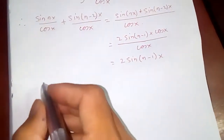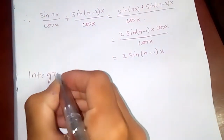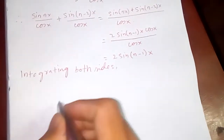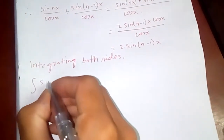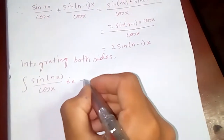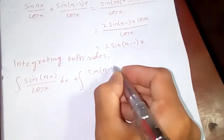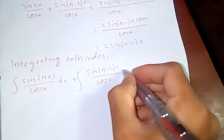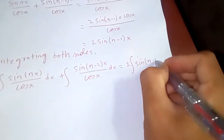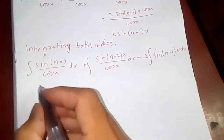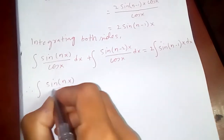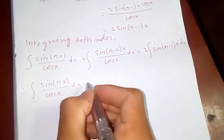Let's integrate both sides. So the integration of sin^n(x) over cos(x) dx plus the integration of sin^(n-2)(x) over cos(x) dx is nothing but 2 times the integral of sin^(n-1)(x) dx.